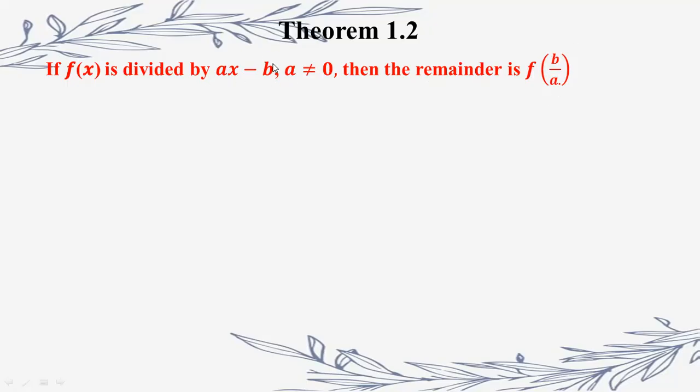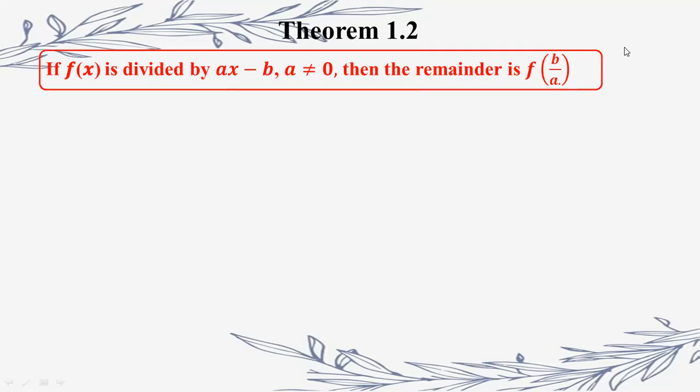We have b here. This is the coefficient of a. Therefore b by a — this is the coefficient of a here. The coefficient of a here is the coefficient of a here.